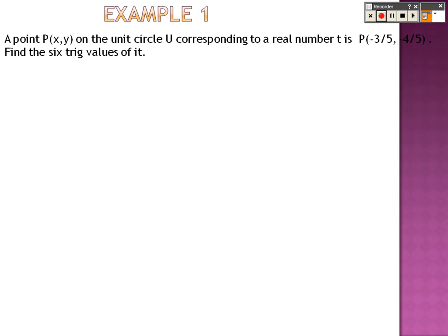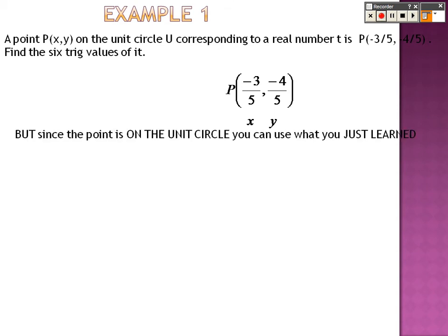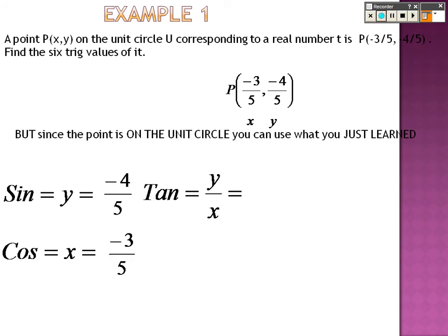In example 1, a point (x, y) is on the unit circle, and they correspond to the real numbers negative 3/5 and I believe that is 4/5. Find the six trig values. Because I'm telling you that it's on the unit circle, you know already that x is cosine and y is sine. It's that simple. So sine is y, which is negative 4/5, cosine is x, which is negative 3/5, so to find their reciprocals, you just need to flip them.